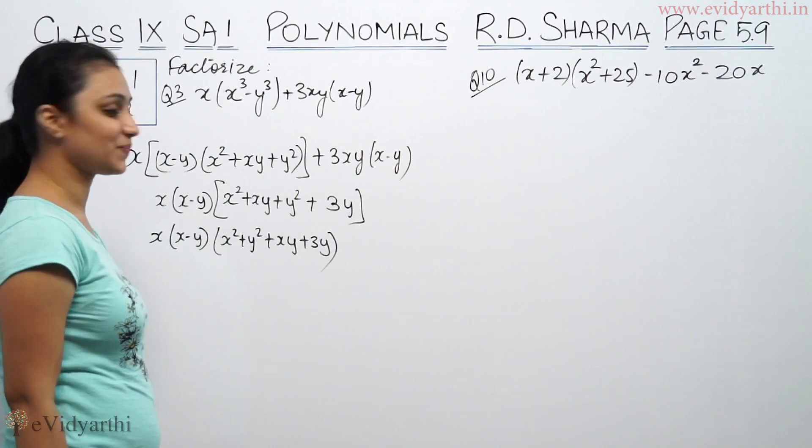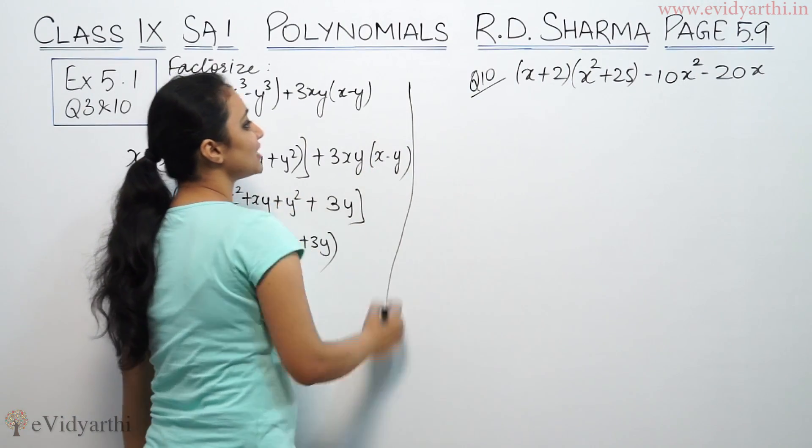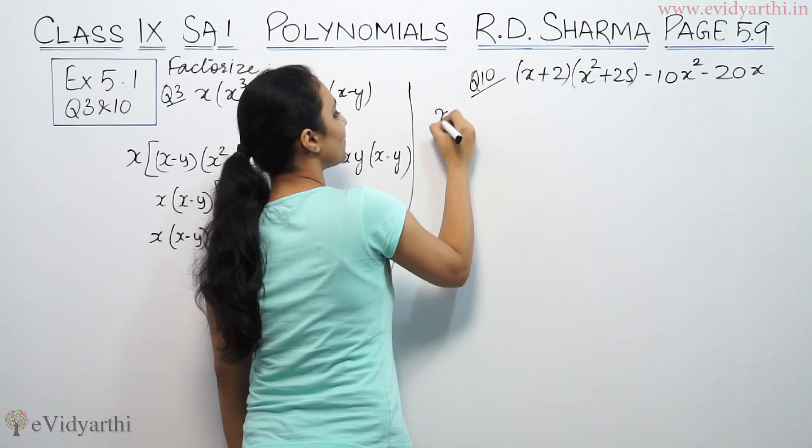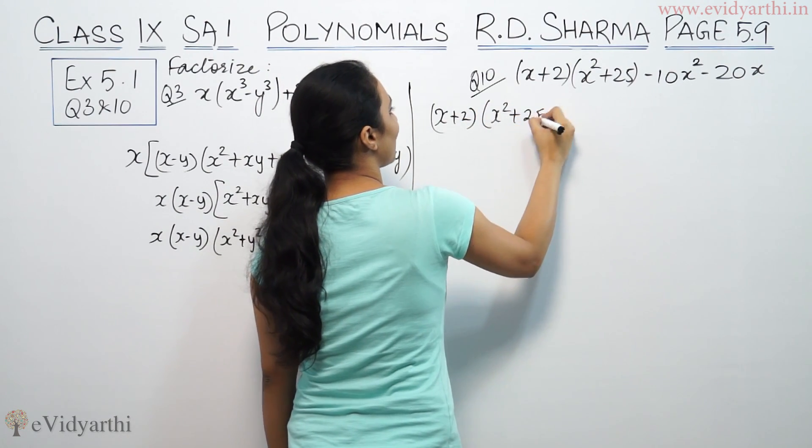You can't factor it further. Now question number 10: (x + 2)(x² + 25 - 10x).